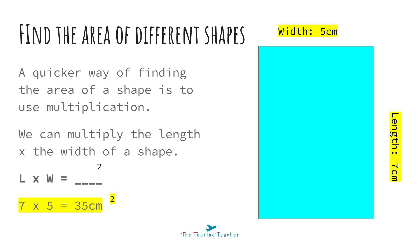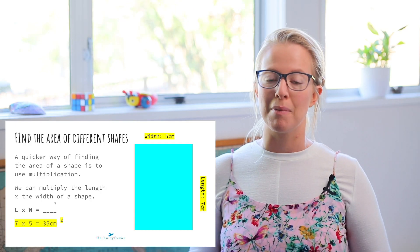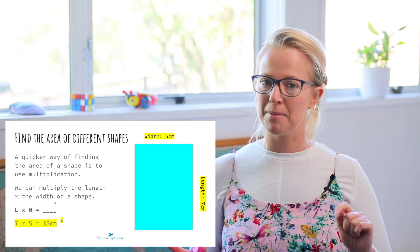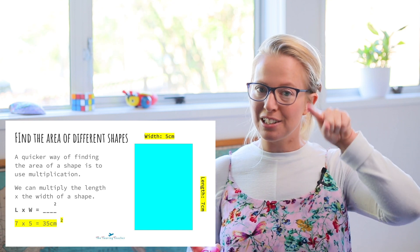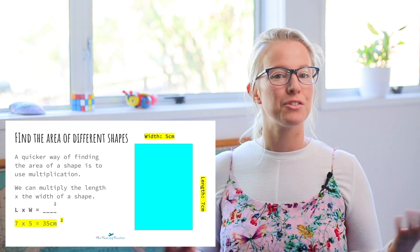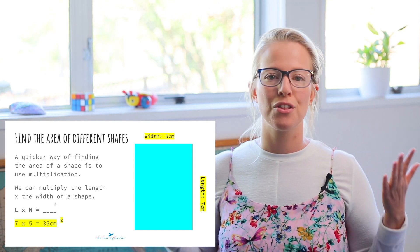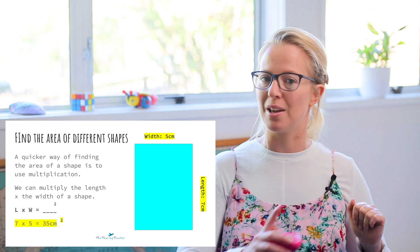So I'm going to be doing length times width, which is seven times five, which is 35. Well done guys. Now I need to put my unit of measurement, so it's 35 centimetres and that little 2 — squared. So my answer is 35 centimetres squared.